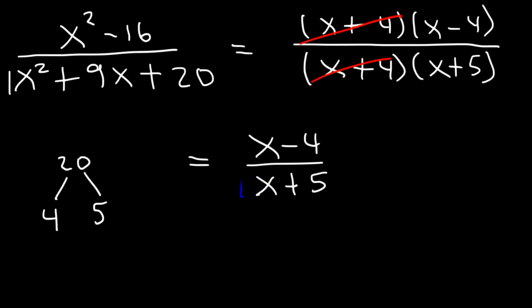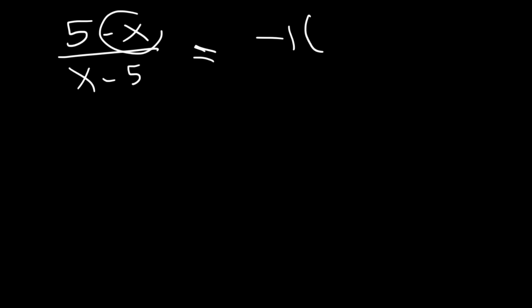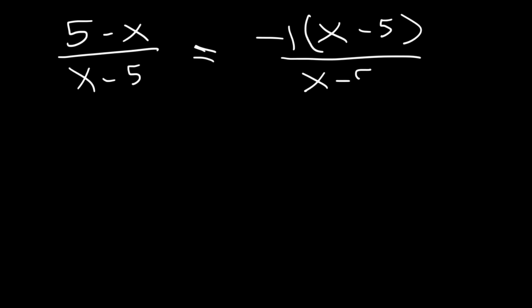That's how you simplify rational expressions. But there's one more example: 5 minus x over x minus 5. These two look very similar but they don't cancel immediately. Whenever you see a situation like this, factor out a negative 1. Taking it from the top: negative x becomes positive x, and positive 5 becomes negative 5, reversing the order to get x minus 5. We can now cancel x minus 5, so the final answer is negative 1.